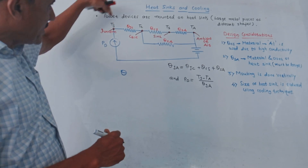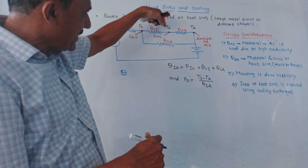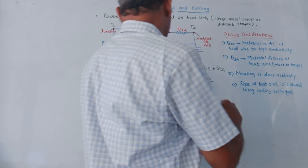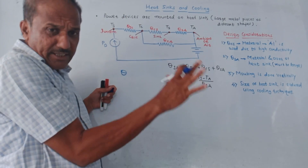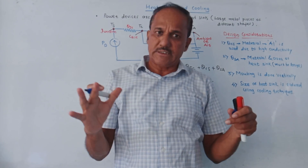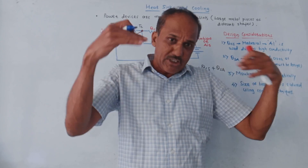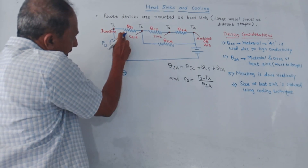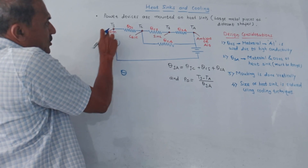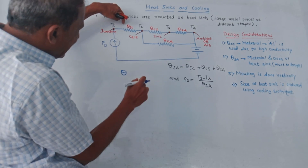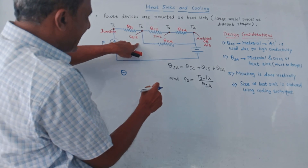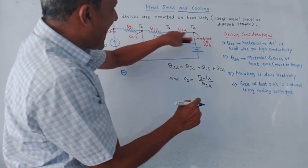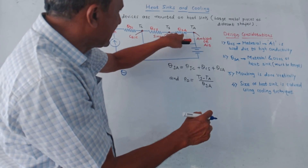TJ indicates junction temperature, TC is case temperature, TS is sink temperature, and TA is the ambient or air temperature. Theta represents the thermal resistance, which is equivalent to electrical resistance. The thermal resistance between junction and case is theta JC, between case and sink is theta CS, and between sink and air or ambient is theta SA.